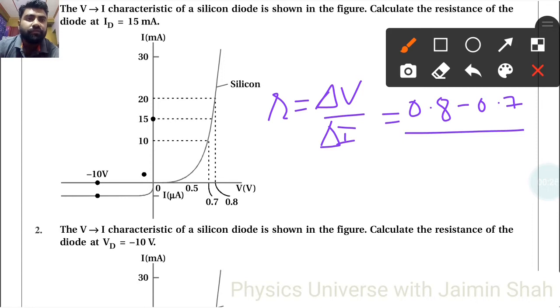So 0.1 upon 10, so that is 0.01 ohm. Now second, the V-I characteristic of a silicon diode, so that is the resistance of the diode at ID.